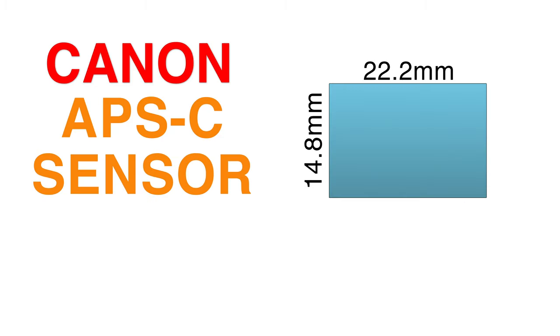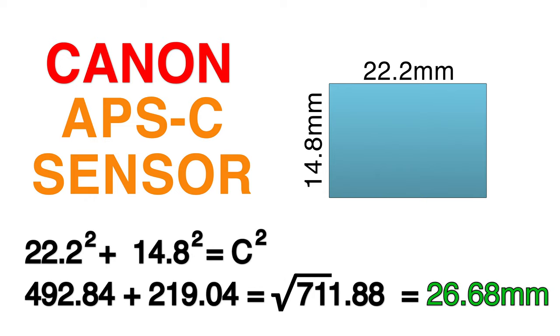So if we take something that we're familiar with, say Canon APS-C, 22.2 millimeters wide, 14.8 millimeters tall, take the square root of that, and we get 26.68 millimeters for the diagonal.